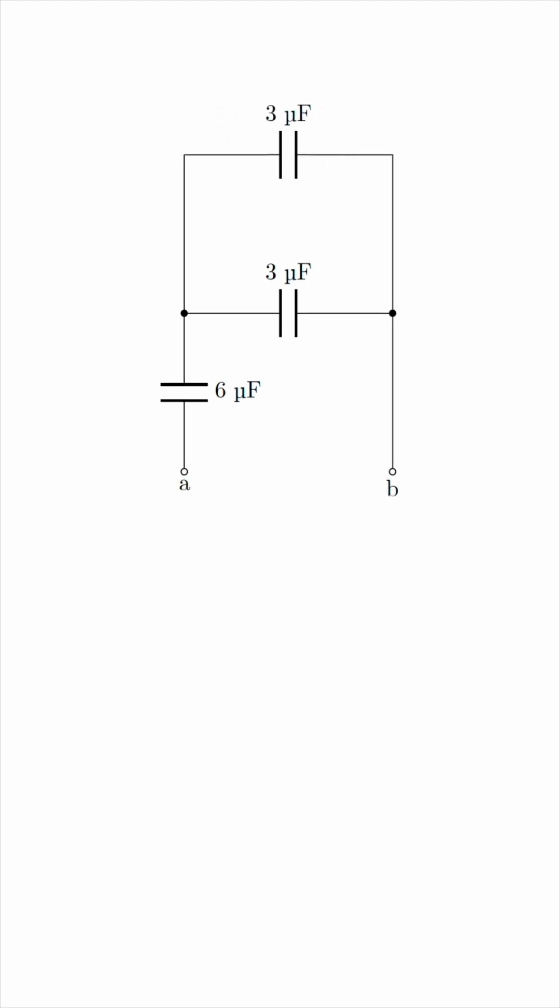And now we see those two 3μF capacitors in parallel. Well, as you may have guessed, parallel capacitors are combined like series resistors. So all we have to do is add 3 and 3, giving us 6μF, like this.